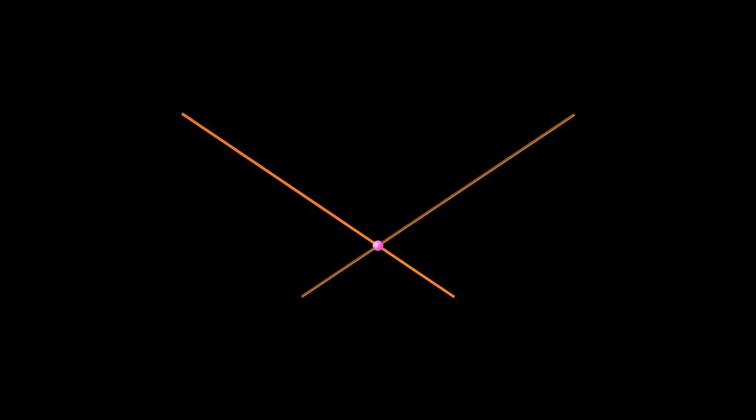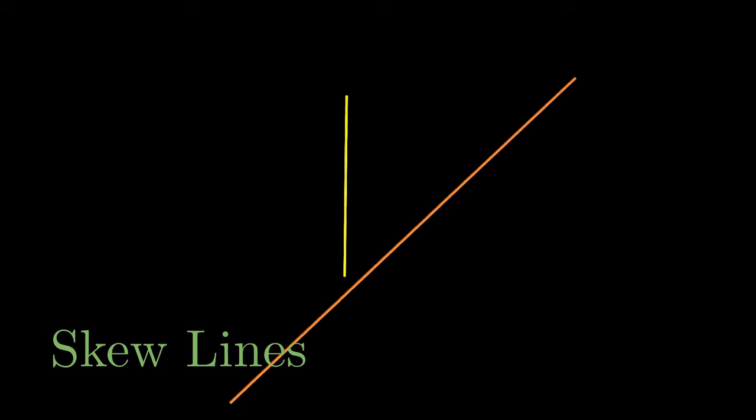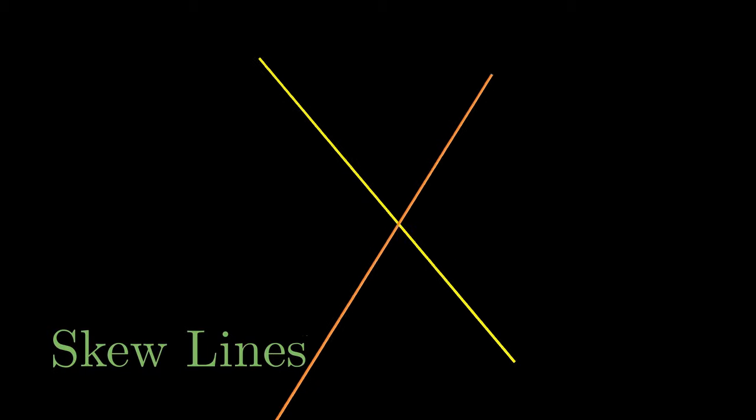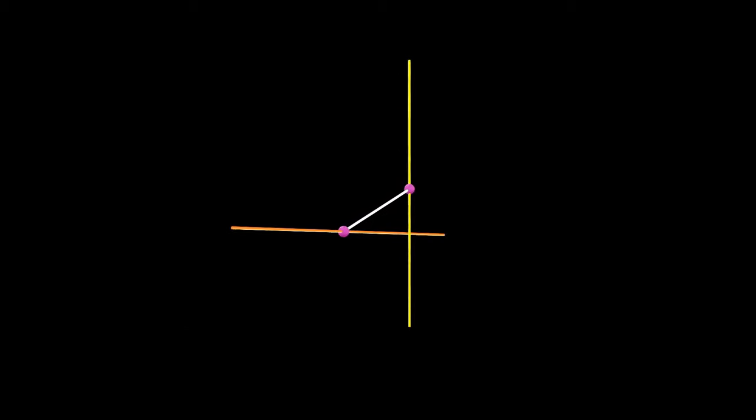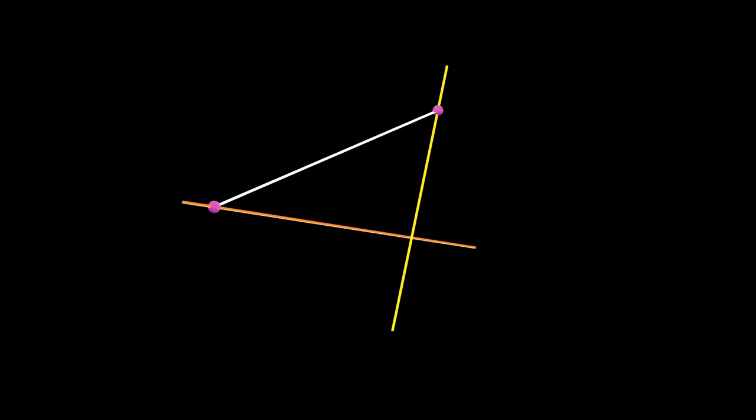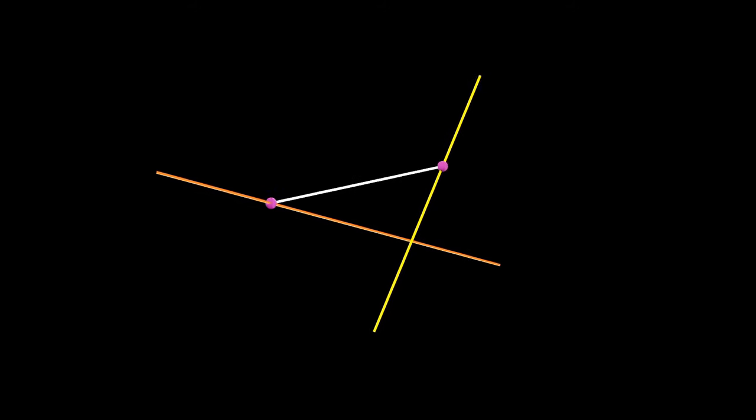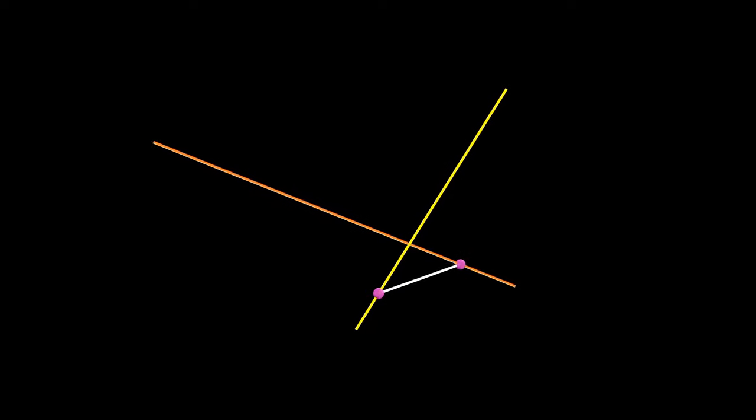The real question we're going to ask is, how many lines intersect two given skew lines? See, lines are skew when they're not parallel with each other and they don't intersect each other, so they're separated and not going in the same direction. Even when this is the case, if there are only two given lines, we can easily form infinitely many lines going through both.